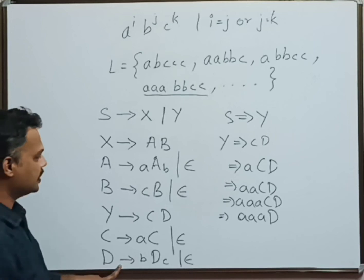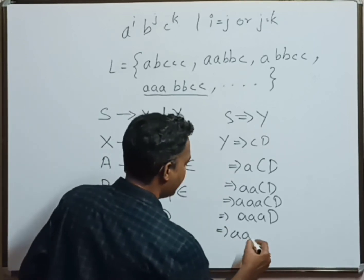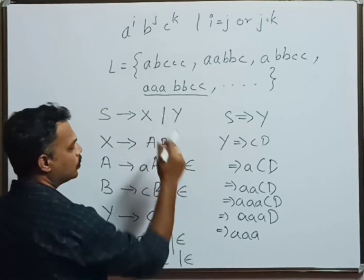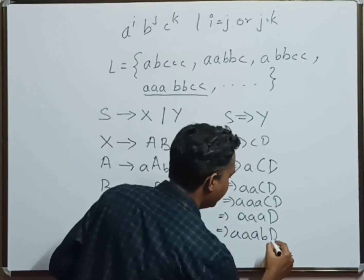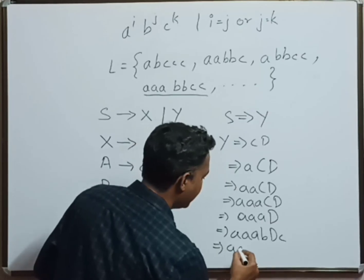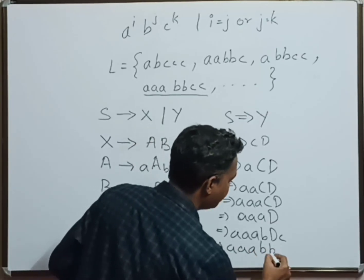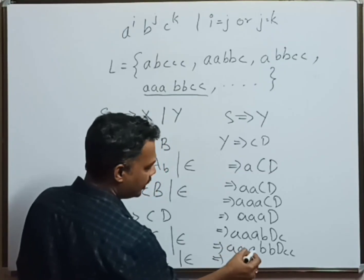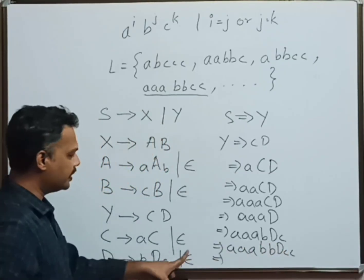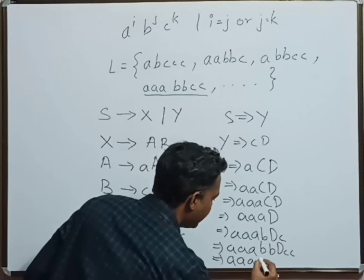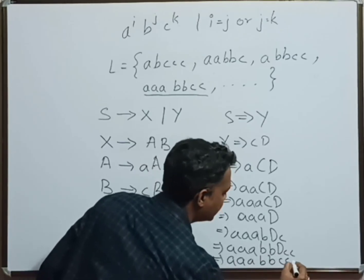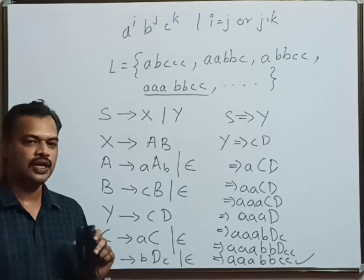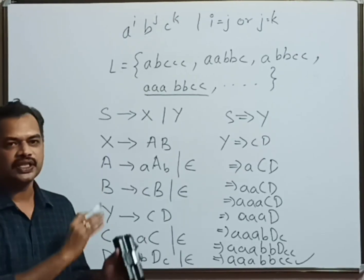What the D rule says: it is aaa, D is nothing but bDc. How many b's and c's do we want? We want two b's and two c's. So bDc one time: aaabDc. B, bDc two times: aaabbDcc. Now I got my string aaabbcc. Replace D with epsilon: aaabbcc, and you have the string.